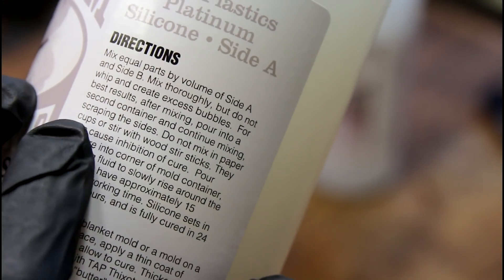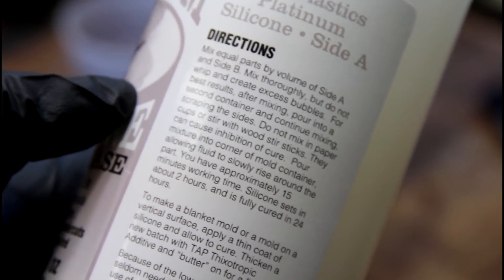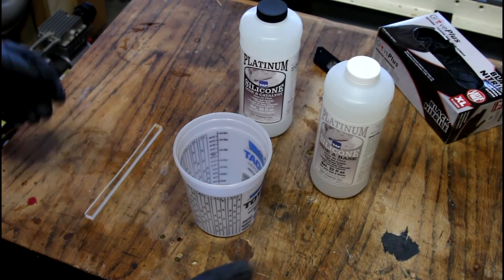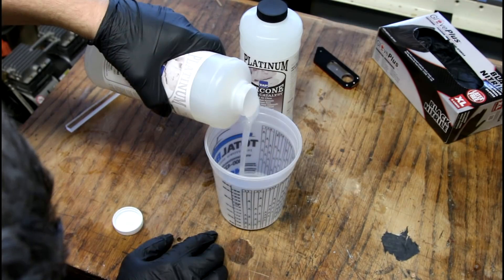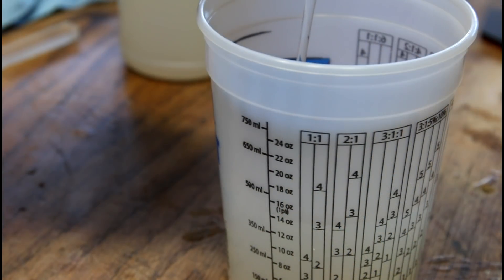Do not mix in a paper cup or with wooden stir sticks. They can cause inhibition to cure. Never seen that before. We know that the bottle is 16 ounces, and we're probably not gonna need that much, but we're gonna mix that much. So that's 8 ounces of each part A and part B.